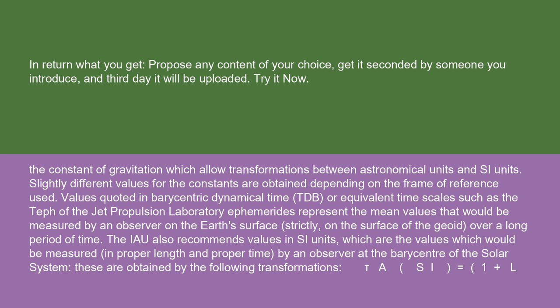Values quoted in barycentric dynamical time (TDB), or equivalent time scale such as the TEF of the Jet Propulsion Laboratory ephemerides, represent the mean values that would be measured by an observer on the Earth's surface — strictly, on the surface of the geoid — over a long period of time. The IAU also recommends values in SI units, which are the values which would be measured, in proper length and proper time, by an observer at the barycenter of the solar system.